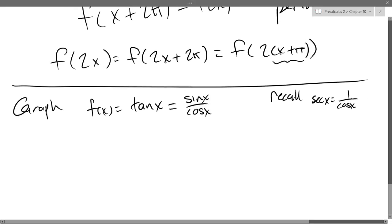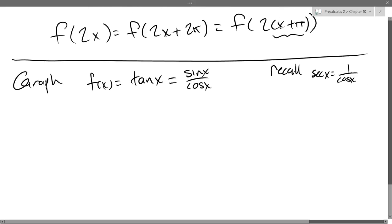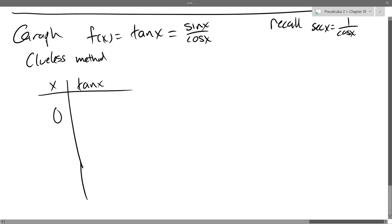So let's go ahead and do the clueless method. We're going to plot some values and then figure out what's going on. We'll just go first quadrant, plot all the values that we know about. So clueless method: x, tan x. We'll start at 0, pi over 6, pi over 4, pi over 3, pi over 2. Tangent of 0 is 0, tangent pi over 6 is 1 over square root 3, pi over 4 is 1, and then square root 3. And pi over 2, tangent is 1 over 0, which is undefined.